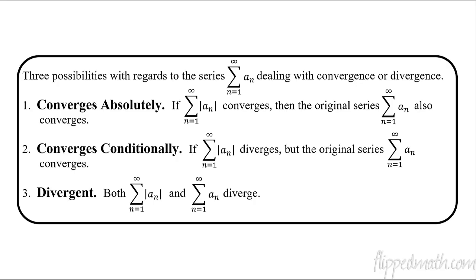Today's lesson, we're still talking about convergence, but we're adding a little nuance — trying to figure out if something converges, does it converge absolutely or conditionally? There are three possibilities: something could converge absolutely, it could converge conditionally, or it just diverges. When you have a series and take its absolute value, if the absolute value converges, we say it converges absolutely — and the original also converges. If the absolute value diverges but the original converges, that's conditional convergence. If both diverge, it's just diverging.